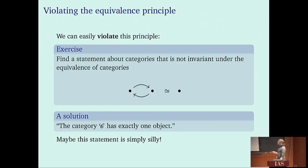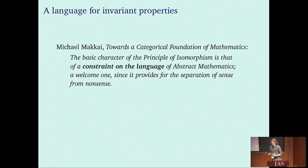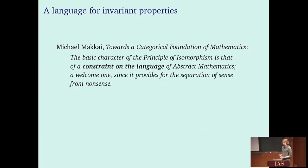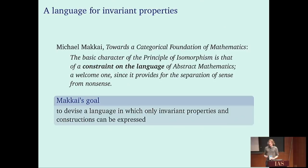Michael Makkai was also very concerned with this problem. In his monograph 'Towards the Categorical Foundation of Mathematics,' he wrote: 'The basic character of the principle of isomorphism is that of a constraint on the language of abstract mathematics, a welcome one since it provides for the separation of sense from nonsense.' Makkai's goal was to devise a language in which only invariant statements, properties, and constructions could be expressed, and this in turn inspired Vladimir very much.